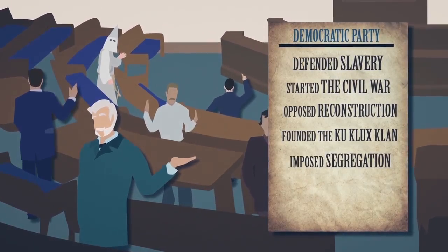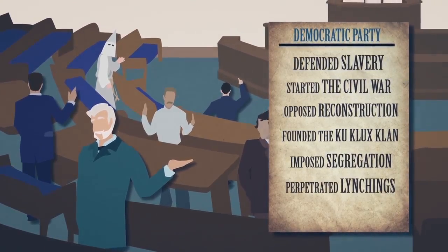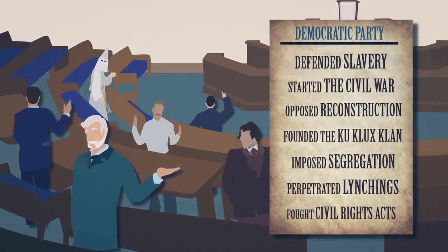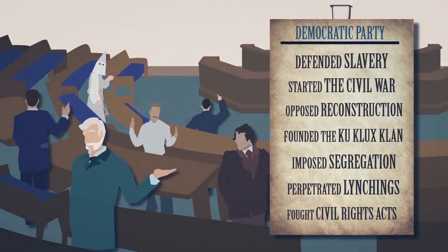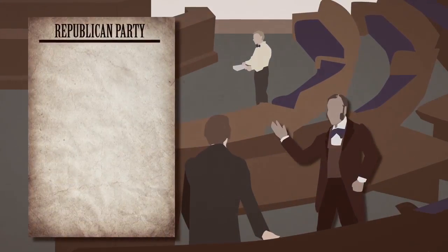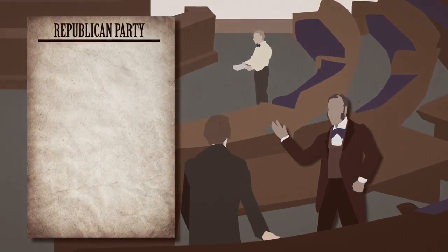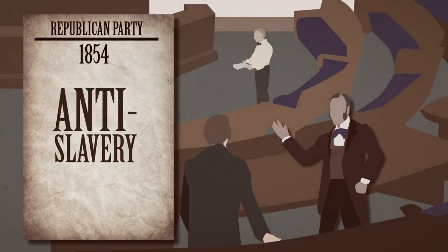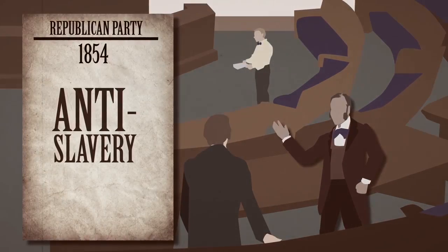The Democratic Party imposed segregation, perpetrated lynchings, and fought against the Civil Rights Acts of the 1950s and 1960s. In contrast, the Republican Party was founded in 1854 as an anti-racist, anti-slavery party. Its mission was to stop the spread of slavery into the new Western territories with the aim of abolishing it entirely.